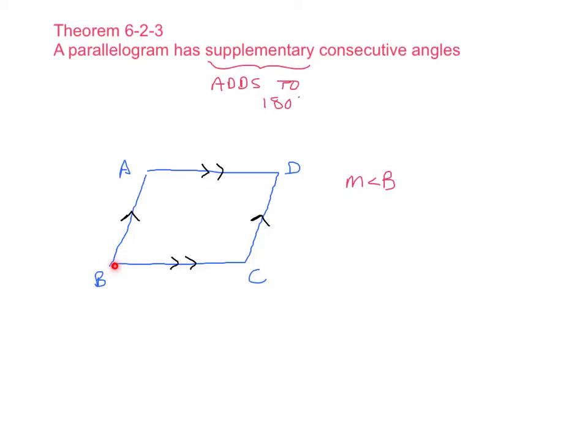So let's look at angle B and we're talking about the angles right next to angle B. So we're talking about A and we're talking about C. What this means is that the measurement of angle B plus the measurement of angle A is equal to 180 degrees.